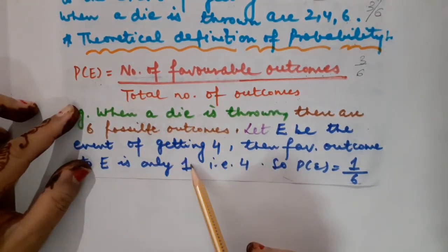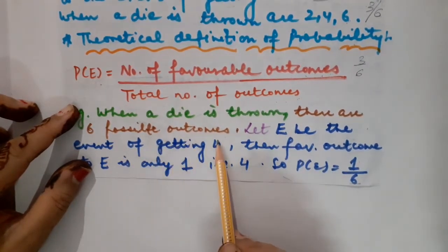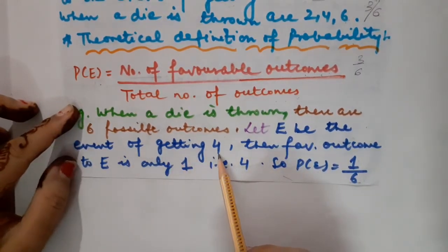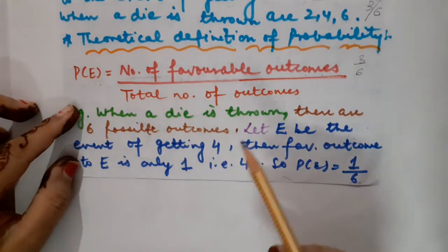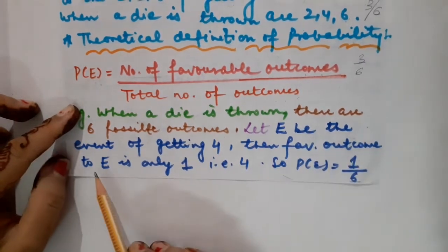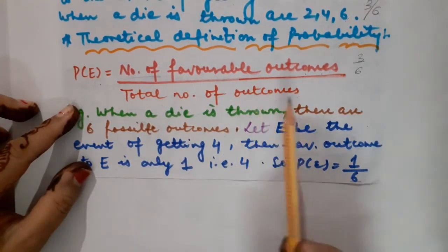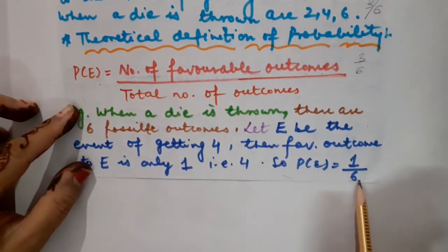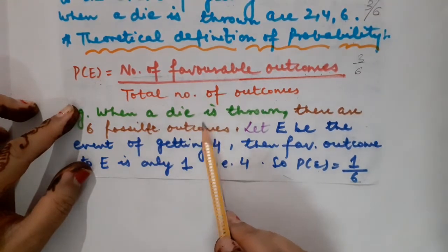Let us understand it through one example. When a die is thrown, you know that there will be total 6 possible outcomes. So let E be the event of getting the digit 4. Can you tell me how many times 4 will occur when you throw the die once? Of course, it will occur one time only. So the favorable outcome to event E will be only 1, and the probability of event E will be equal to 1 upon 6. Because 6 is the total number of possible outcomes — in a die, the number starts from 1 and goes up to 6.